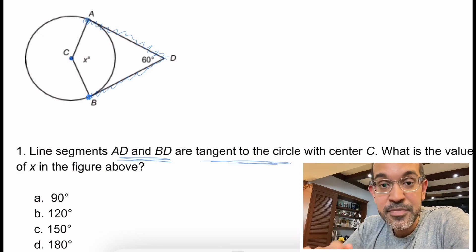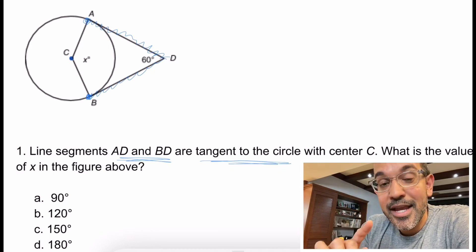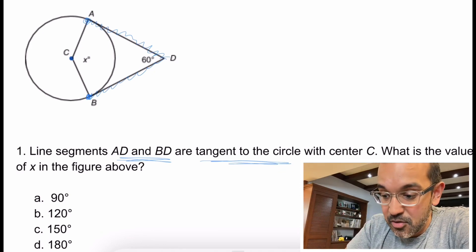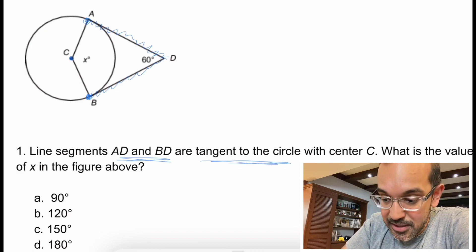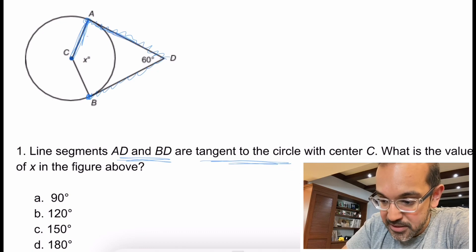The second thing is that it creates a 90 degree angle with a line from the center, with the radius. So this here to here has to be a 90 degree angle.